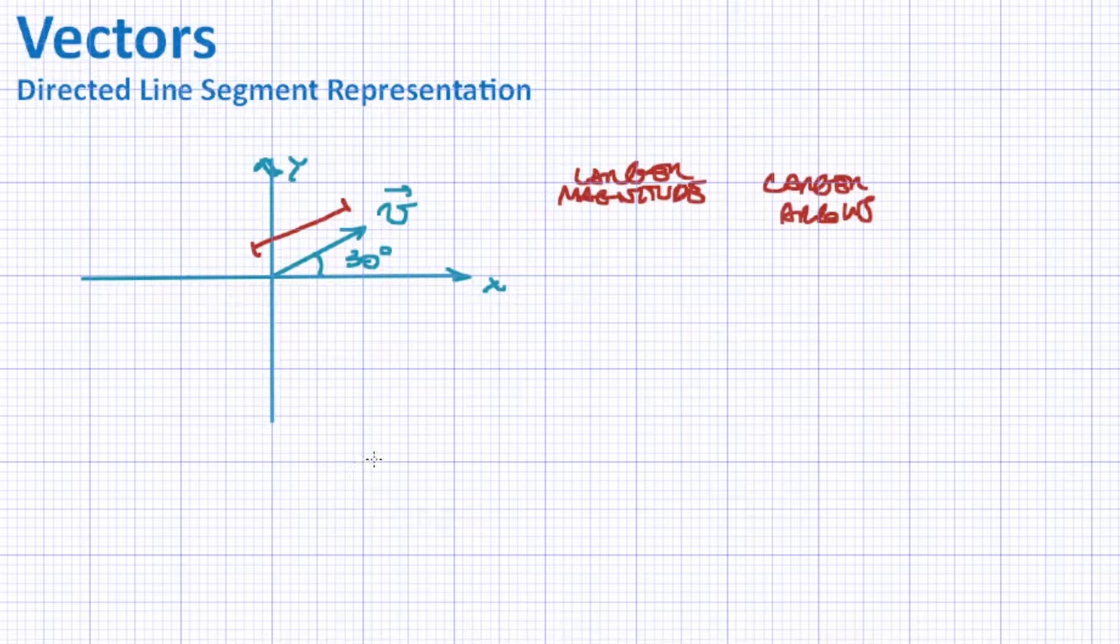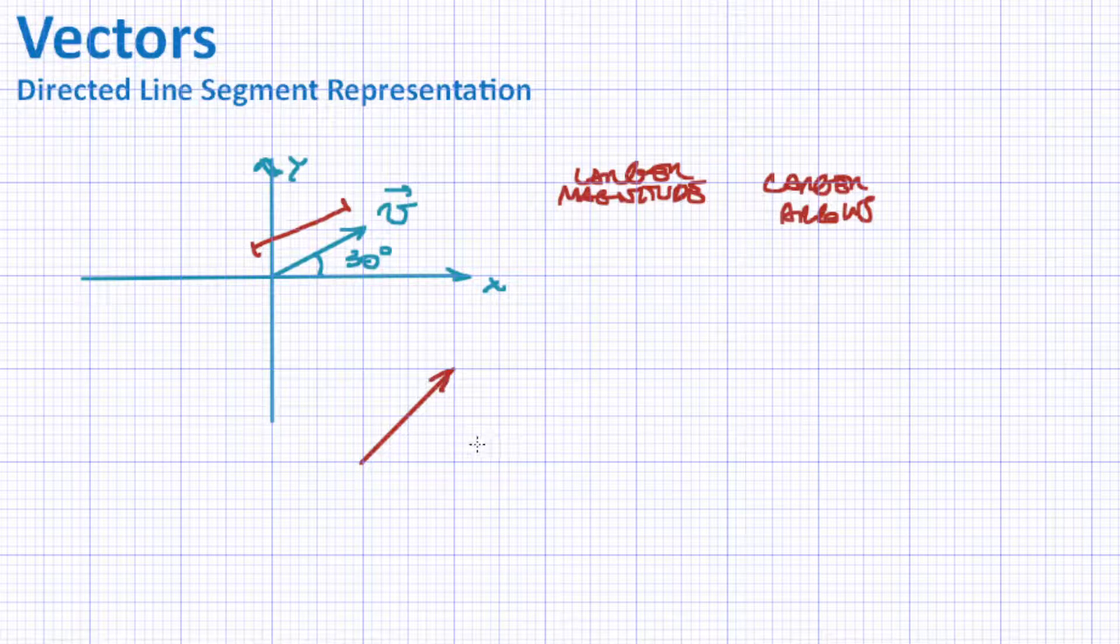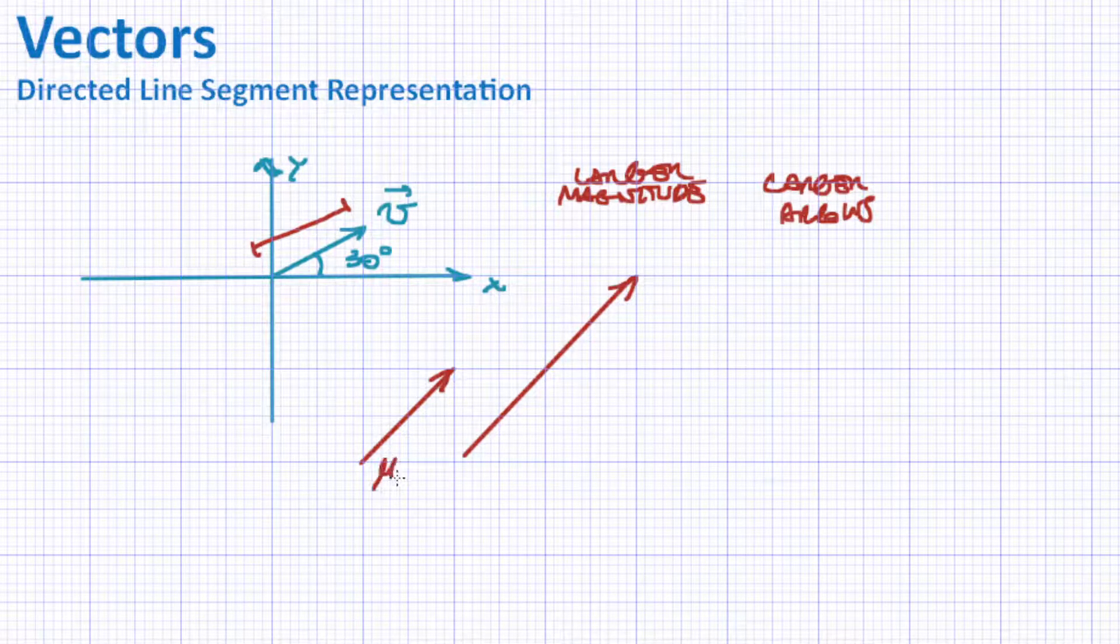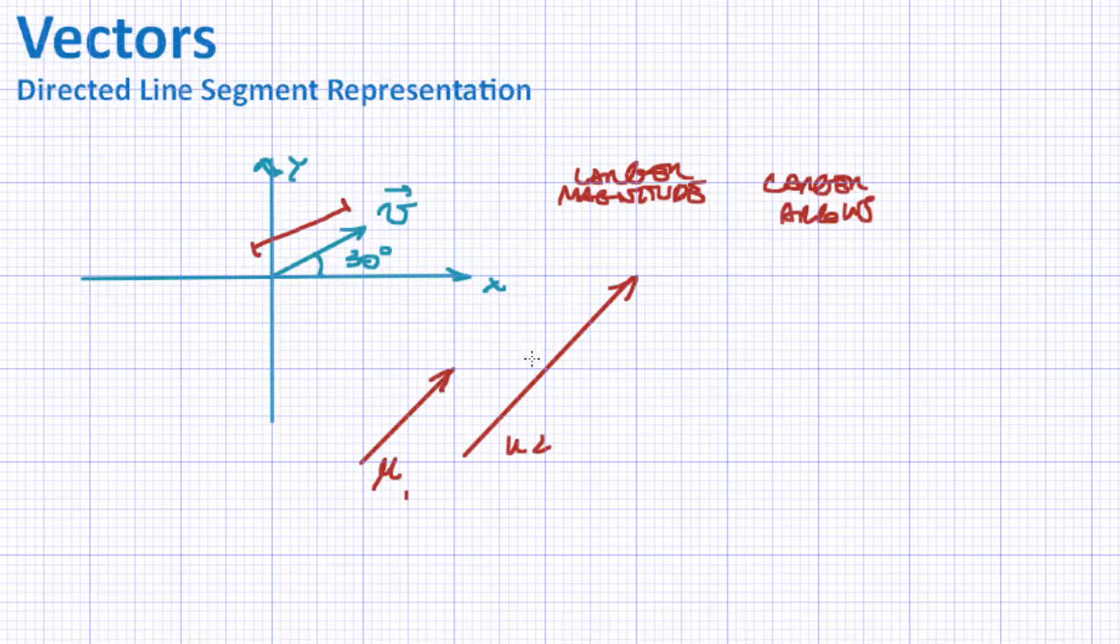So in a problem, you were presented with, let's say, two vectors like those here, and I'll call this u1 and u2. You could already assume that u2 is twice the magnitude of u1. And also, they're in the same direction because those lines are parallel. Take a look at the gradient. Gradient is 1, gradient is 1.